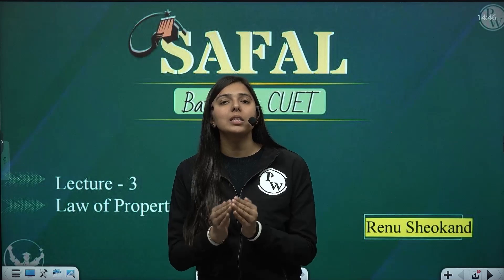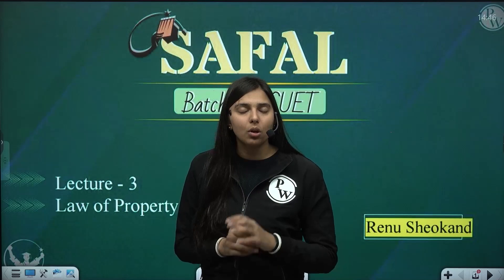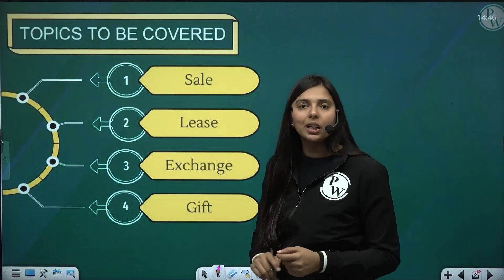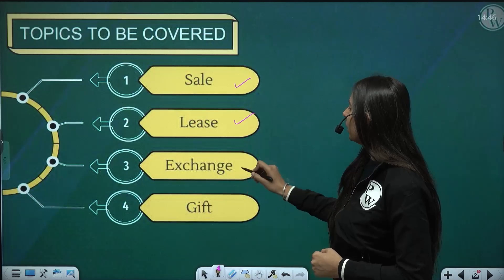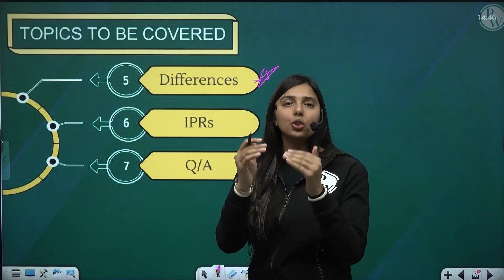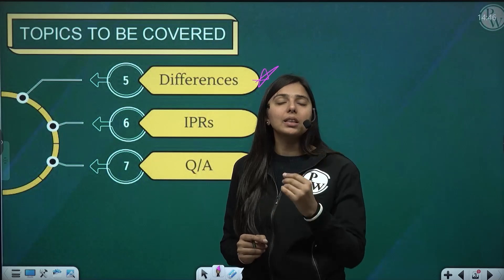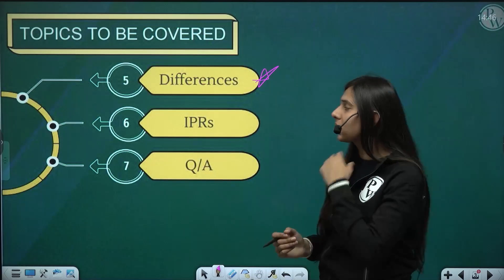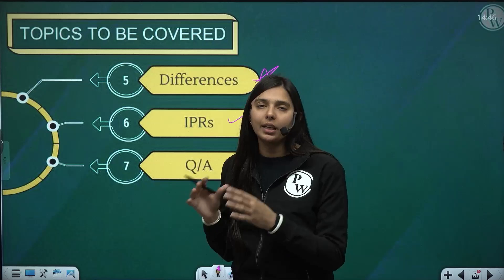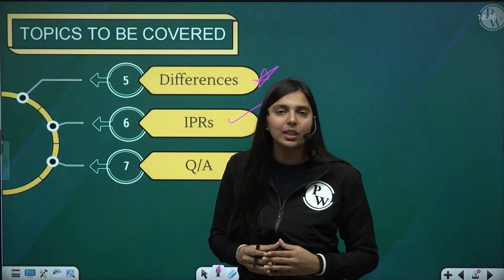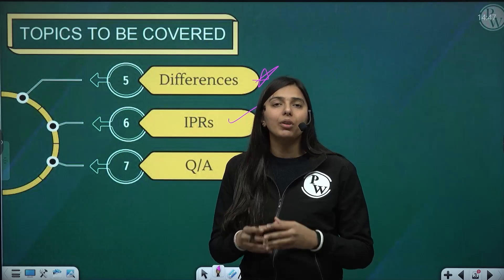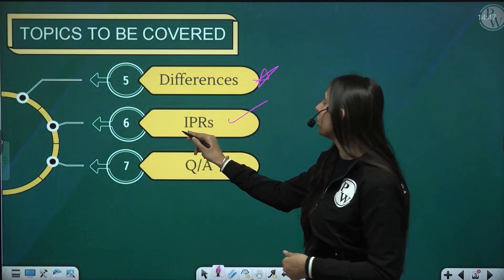In today's class, we are going to discuss various types of transfers: sale, lease, exchange, and gift. We will also discuss in detail the differences between these types of transfers. Then, a very important concept — IPRs, Intellectual Property Rights. In the previous class I gave a brief introduction covering copyrights, trademarks, and patents. But in today's class, we will discuss the concept of IPRs in detail.